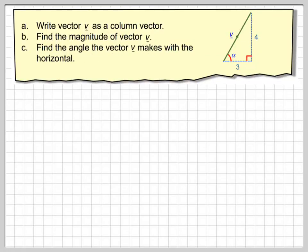Write the vector v as a column vector, find the magnitude of the vector v, and find the angle of vector v makes with the horizontal. So, this is the vector v, and we know that it goes along 3 and up 4.